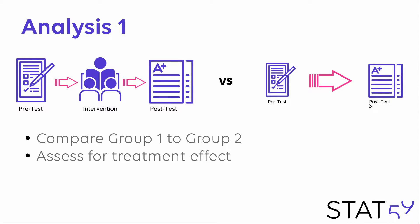Then we move on to our analysis, and this is where the Solomon 4 group design really shines. In the first part of the analysis, we will compare group 1 to group 2 to assess for treatment effect — comparing the pre-test and post-test scores to see if there's a difference between the intervention group and the non-intervention group. If your teaching sessions are working, you would expect the difference between pre-test and post-test to be much better in the intervention group.